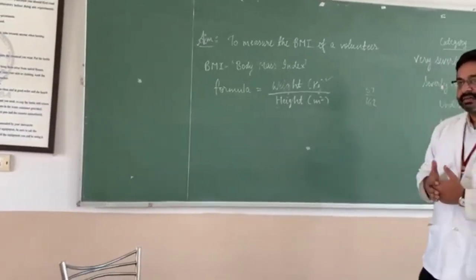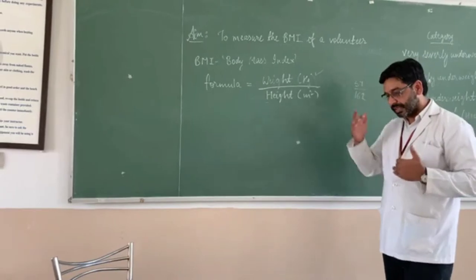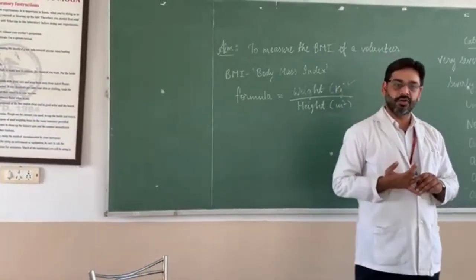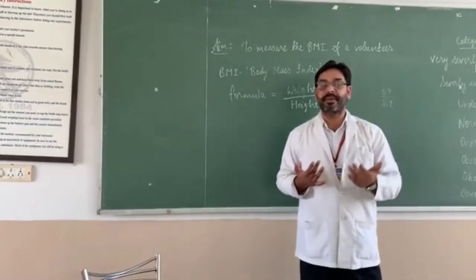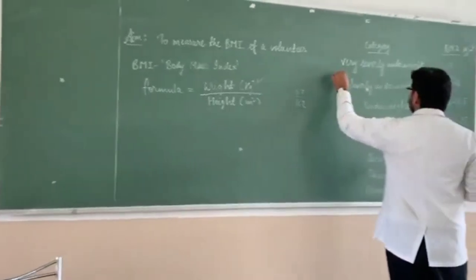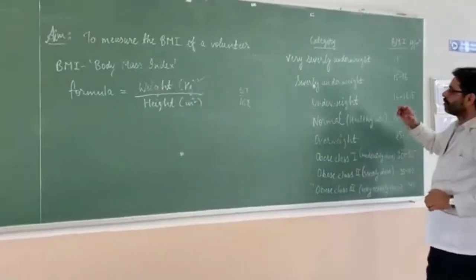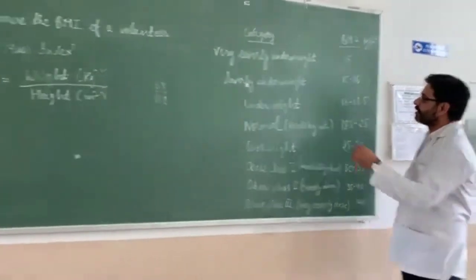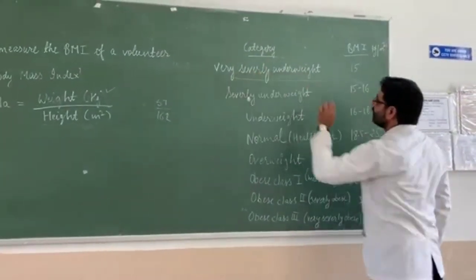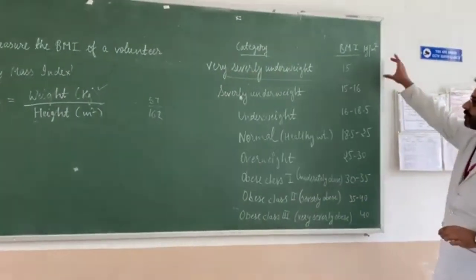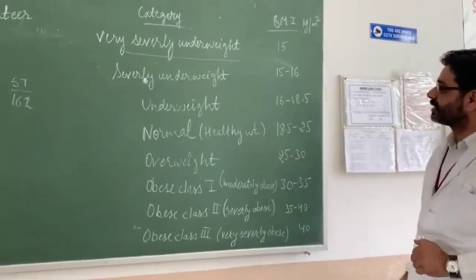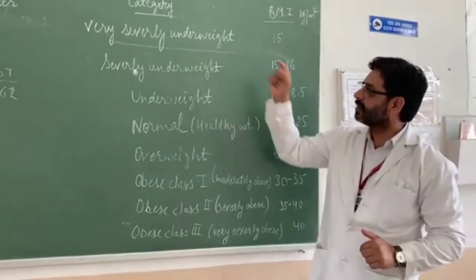After calculating the BMI, we will check whether the person is underweight, normal, or obese. We have some categories to measure BMI. One is very severe underweight condition: the person whose BMI is less than 15 kg/m² falls in the underweight category.